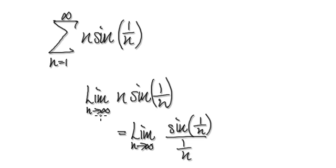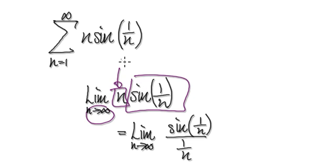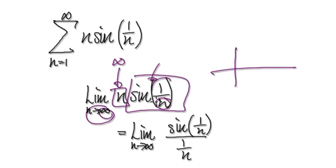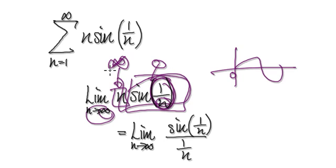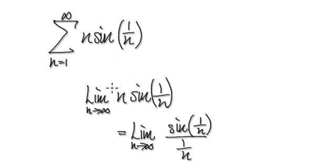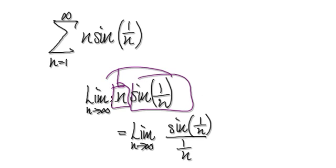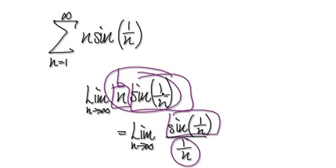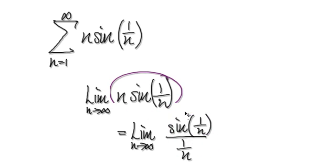So the first thing we should do is check it. As n tends to infinity, you've got one block multiplying another block. This block here is going to get bigger and bigger. This block here — as n gets very, very big, this thing is going to be heading towards zero, sine of zero. So this block is heading towards zero, and this is heading towards zero as n tends to infinity, which is an indeterminate form. So we use the trick we've always used in the past, which is to rewrite this whole thing as one block divided by one over n. This is exactly the same, just written differently.